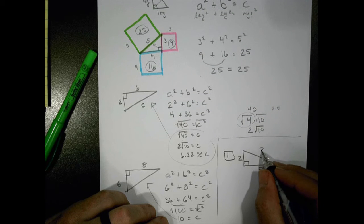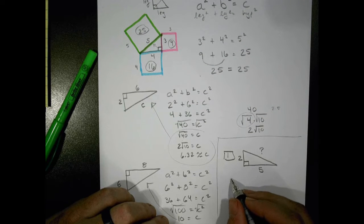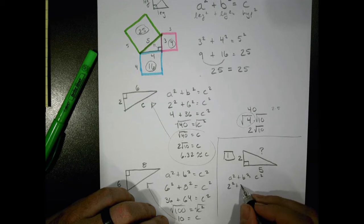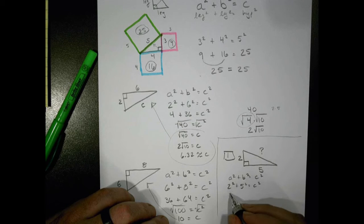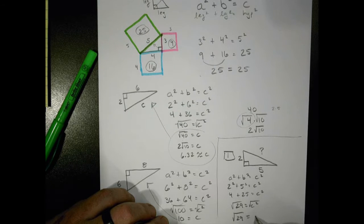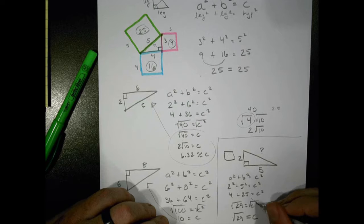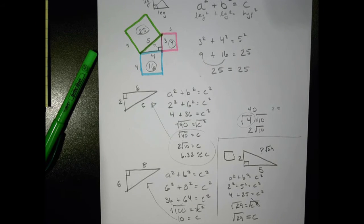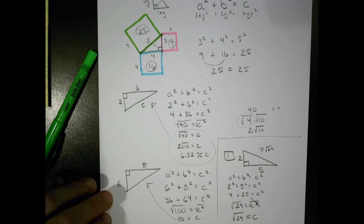Let's see what you got for that missing side length. We have a squared plus b squared equals c squared. Two squared plus five squared equals c squared: four plus 25 equals c squared. Four plus 25 is 29, so 29 equals c squared. Taking the square root of both sides, the square root of 29 equals c. The missing value is the square root of 29 — maybe not a pretty number, but it's correct.